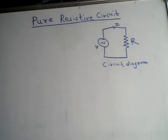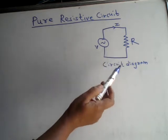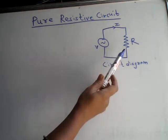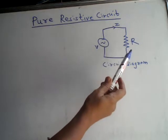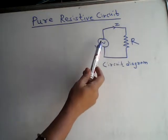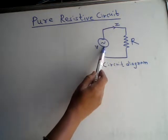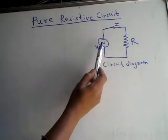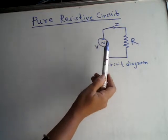In this session I will explain about pure resistive circuit. This is a circuit diagram which consists of a pure resistance represented by R, connected across a voltage source. This voltage source is AC, which is represented by V.